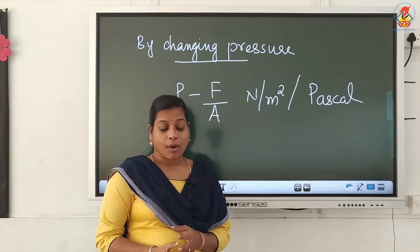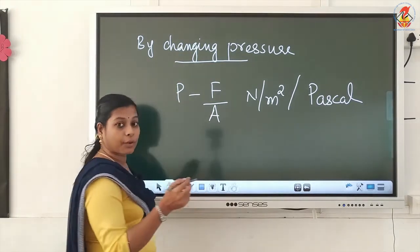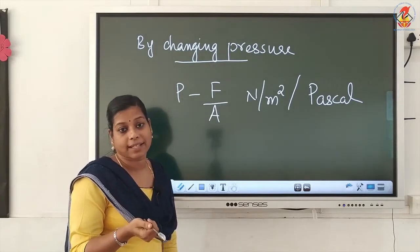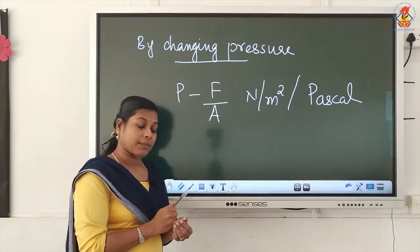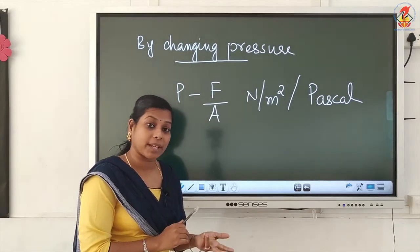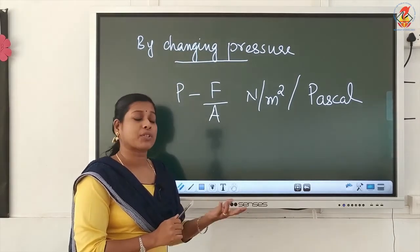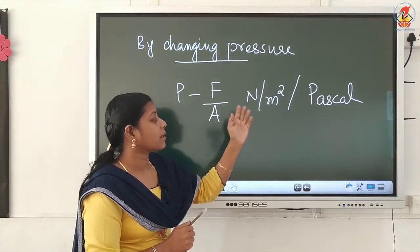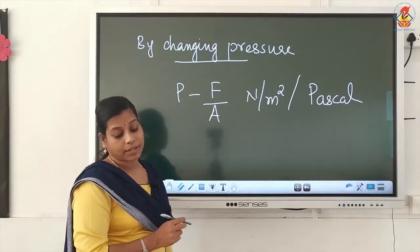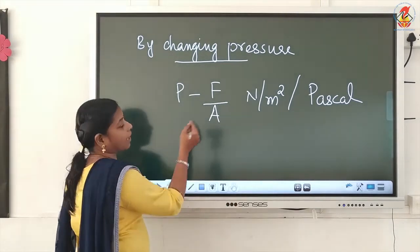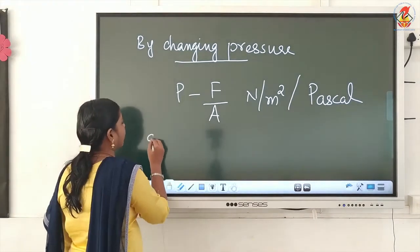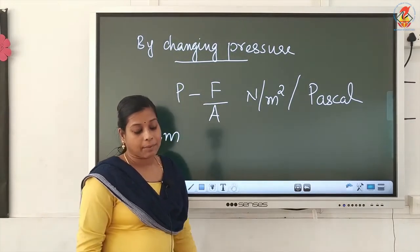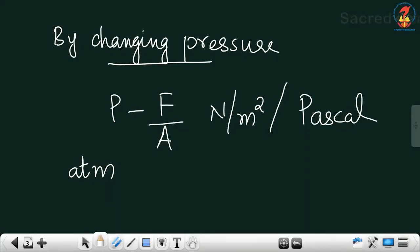Another unit for pressure is atmosphere. Just as for measuring length there are different scales such as centimeter, meter, and kilometer, pressure can also be measured in different units. The units are Newton per meter square, Pascal, and atmosphere. We write atmosphere as ATM. So atmosphere is another unit for measuring pressure.